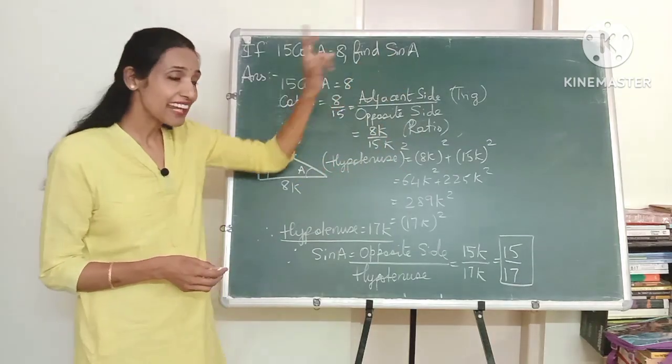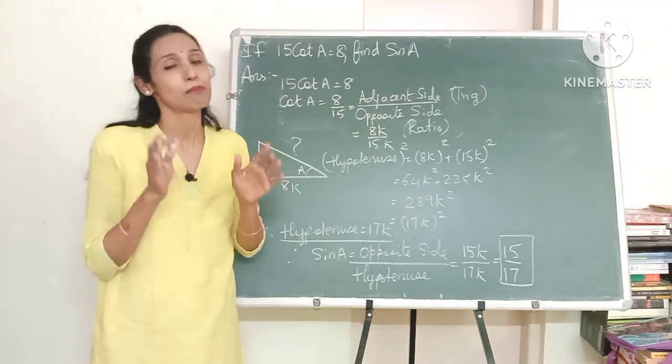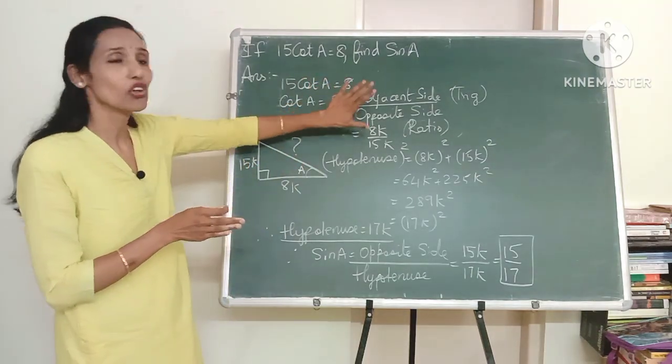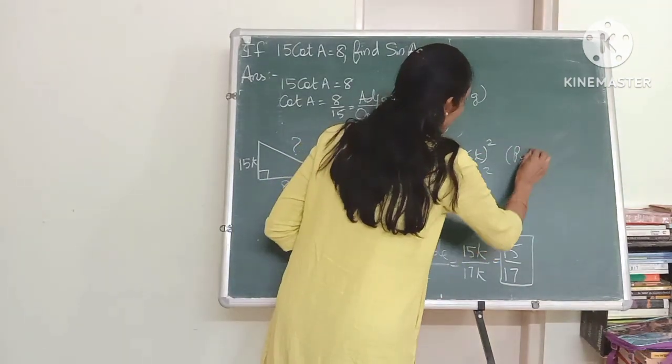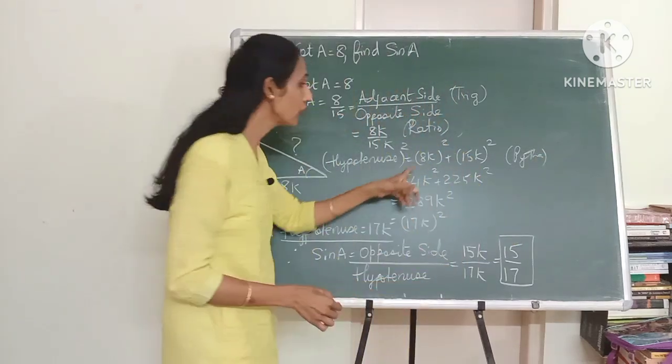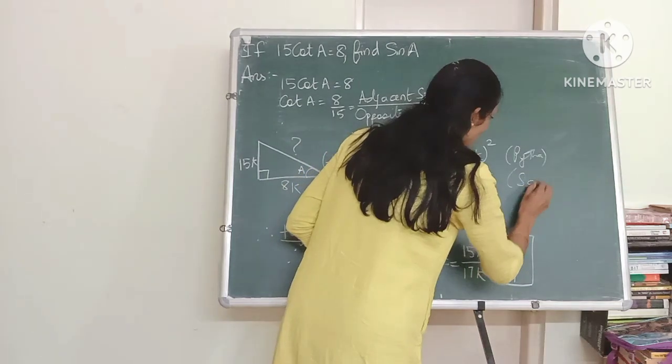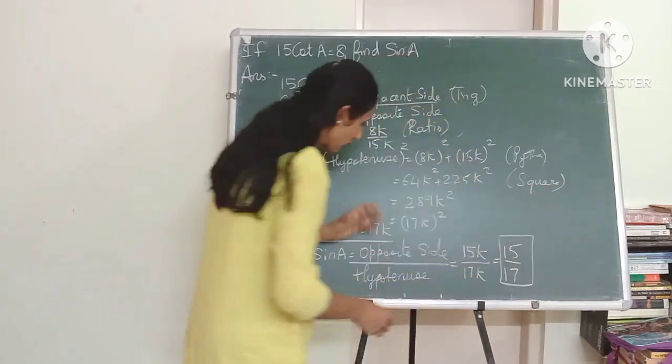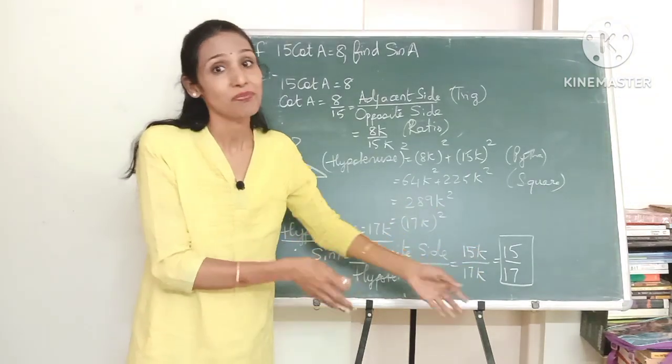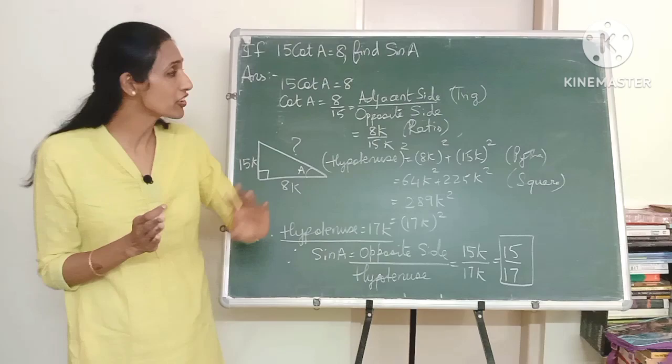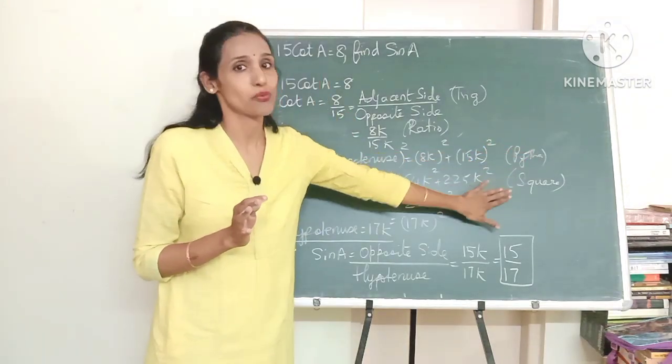Now because we need to find sine A we have to find the hypotenuse and that's why we have used Pythagoras theorem. So see the trigonometry part got over here, we used ratio. Now we are using Pythagoras theorem and of course you need to know how to do the squares of 8k. So you need to know about squares and square roots definitely and finally we have used the trigonometry part again to find the value of sine. So in this example also apart from trigonometry which chapters have we used? Pythagoras theorem, squares and square roots.